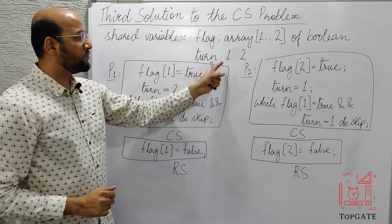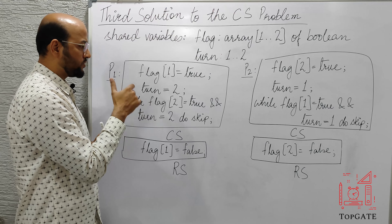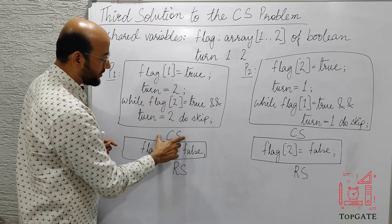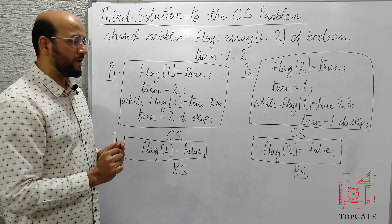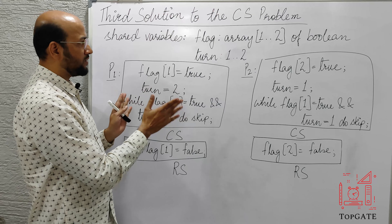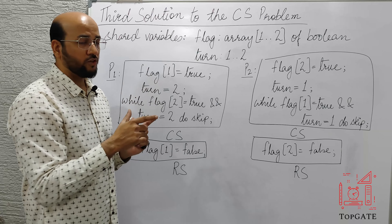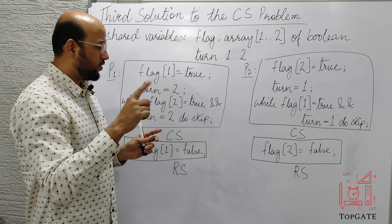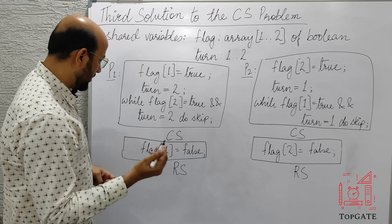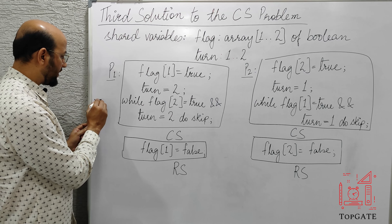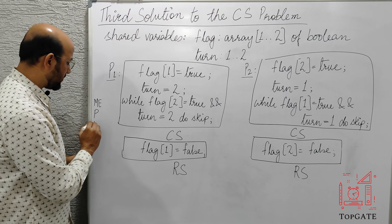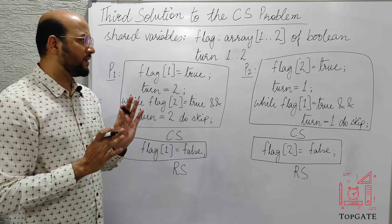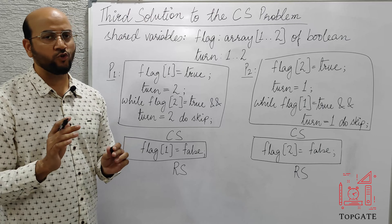This is the code for P1 and this is the code for P2, structured in the typical process PI format: entry section, then the critical section, then the exit section, and finally the remainder section. We will discuss this and see whether it satisfies all three requirements. I will take several situations and in every situation, we will verify whether all three requirements — mutual exclusion, progress, and bounded waiting — are being satisfied.